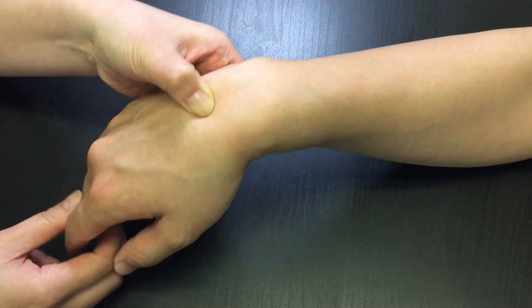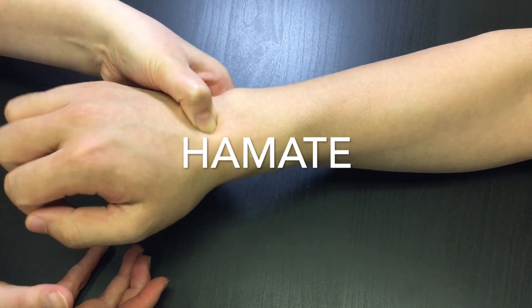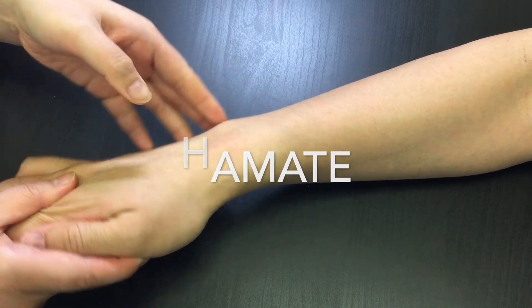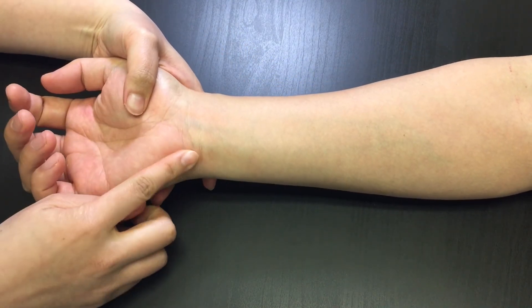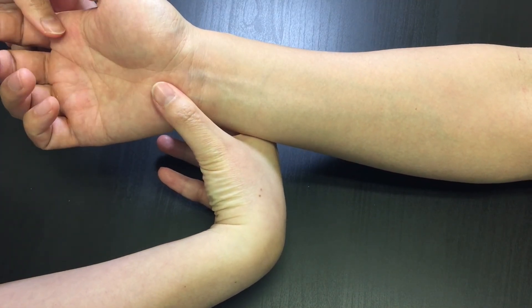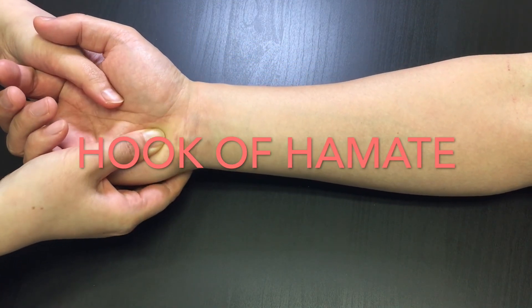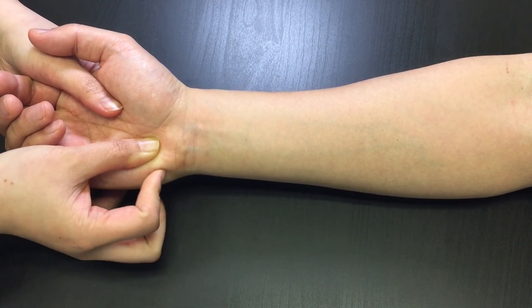To locate the hamate, you need to locate the pisiform first. And then put your first interphalangeal joint on pisiform and then flex the joint toward the base of index finger. You can feel the hook of hamate underneath the thumb pad. Your patient may feel tender to palpation.